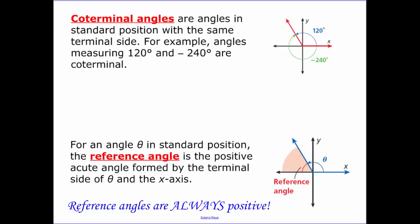Coterminal angles are angles in a standard position with the same terminal side. So I could rotate positive or I could rotate negative. And usually we're going to be either adding 360 to get another positive angle or subtracting 360 to get a negative coterminal angle. Because all the way around a circle is 360 degrees.